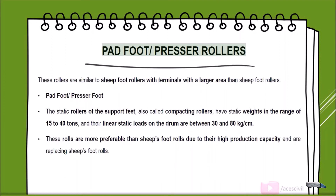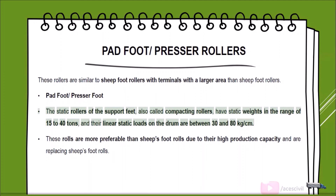Pad foot/presser rollers are similar to sheep's foot rollers but with terminals having a larger contact area. The static rollers, also called compacting rollers, have static weights in the range of 15 to 40 tons and linear static loads on the drum between 30 and 80 kg/cm.